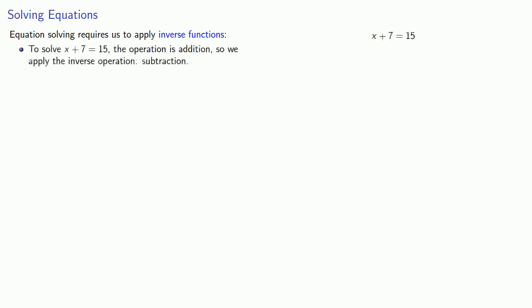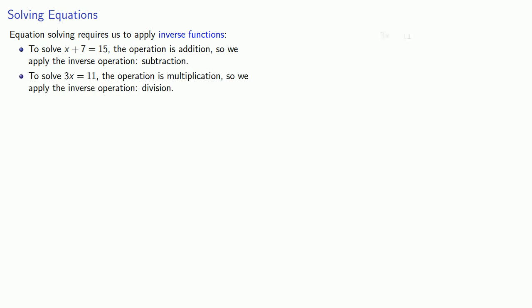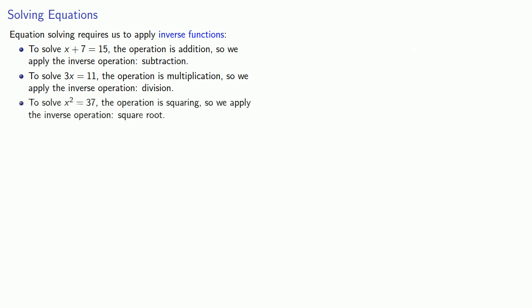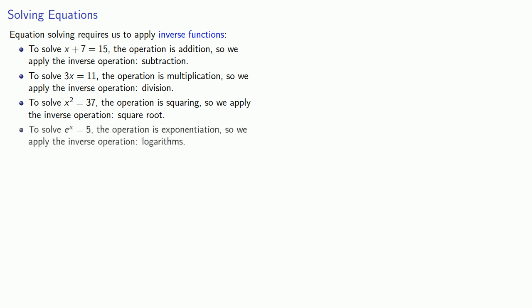If I want to solve x plus 7 equals 15, the operation is addition, so we apply the inverse operation, subtraction. Or if I want to solve 3x equals 11, the operation is multiplication, so we apply the inverse operation, division. If I have x squared equals 37, the operation is squaring, so we apply the inverse operation, the square root. If I want to solve e to the x equals 5, the operation is exponentiation, so we apply the inverse operation, and we hit both sides with the log.